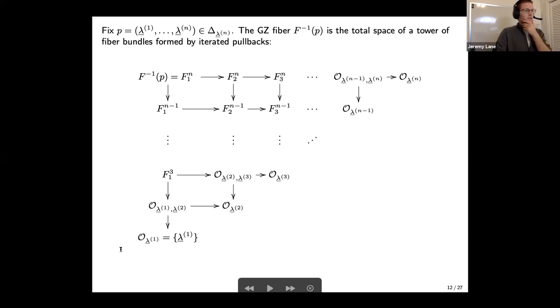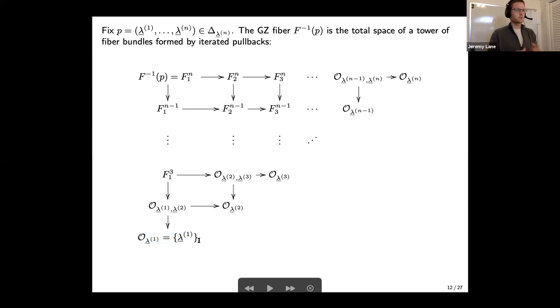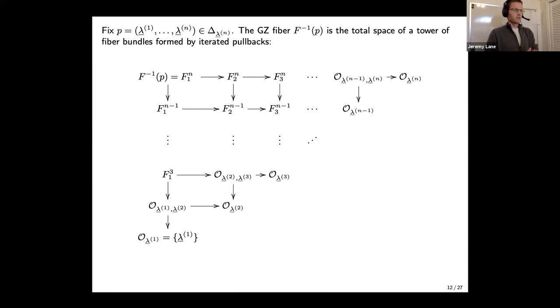But for the diamond pattern corresponding to a vertex here, the contribution to the dimension is three, which is half the dimension of the orbit (six). So this is also Lagrangian, even though it corresponds to a vertex — a singular point in the boundary of the Gelfand-Tsetlin polytope. This is very different from what we know from toric varieties and toric moment maps.